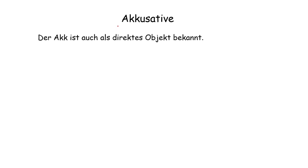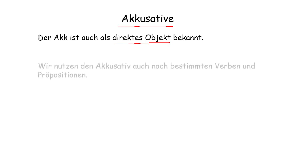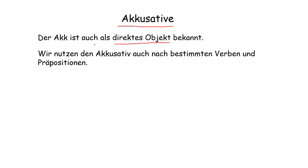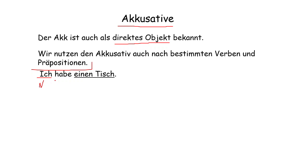Accusative is the direct object of a sentence. We use the accusative after specific verbs and prepositions. After certain prepositions we use only accusative, and after certain verbs we use accusative. For example: 'Ich habe ein Tisch.' Here 'Ich' is the nominative — subject of the sentence — 'habe' is the verb, and 'ein Tisch' is accusative — the object of the sentence.